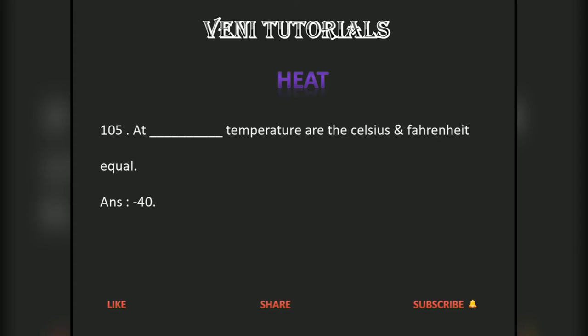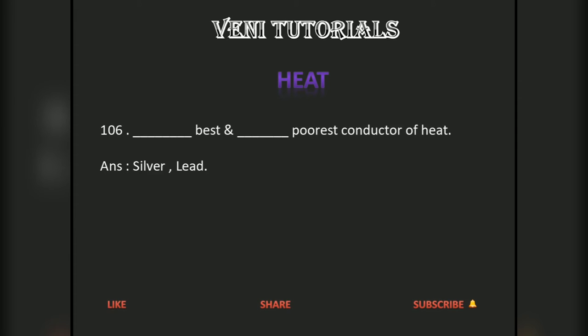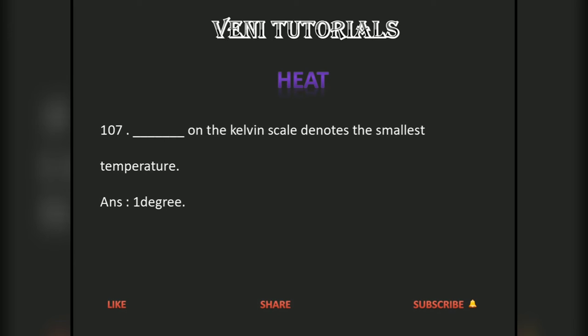A block of ice can radiate as well as absorb heat. The temperature at which Celsius and Fahrenheit are equal is minus 40. Silver is the best conductor of heat and lead is the poorest conductor of heat. On the Kelvin scale, the smallest temperature is 1 degree.